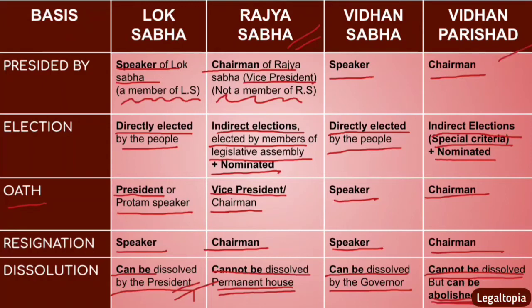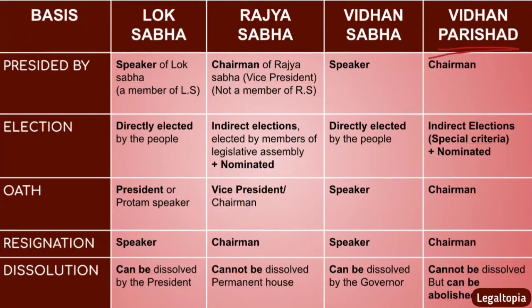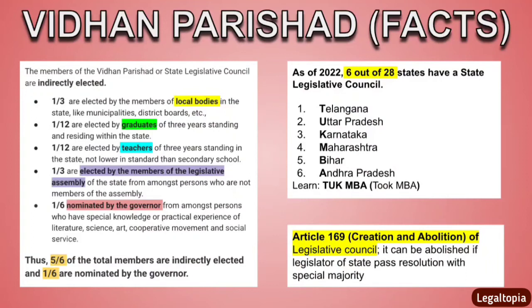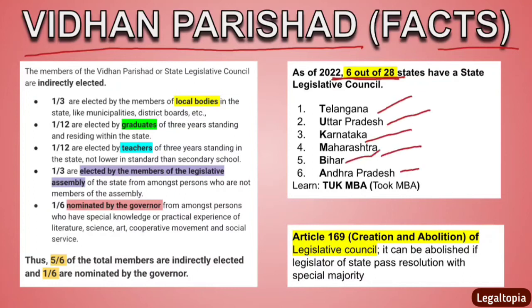Not all states have Vidhan Parishat. Only 6 out of 28 states have it. To remember them, use the mnemonic TUK-MBA: Telangana, Uttar Pradesh, Karnataka, Maharashtra, Bihar, and Andhra Pradesh. The rest have either abolished it or never established it.